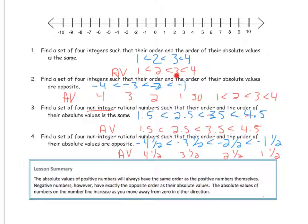So 4 integers that their order and their order of their absolute values are opposite would be this. So I chose negative 4. It's further to the left, so that is less than negative 3, which is less than negative 2, which is less than negative 1. But when I took their absolute values, negative 4 is 4 units away from 0. Negative 3 is 3 units away. Negative 2 is 2. Negative 1 is 1. So now these are the exact opposite. So 4 is greater than 3 is greater than 2 is greater than 1. So we'd have to write it the opposite from least to greatest like this.